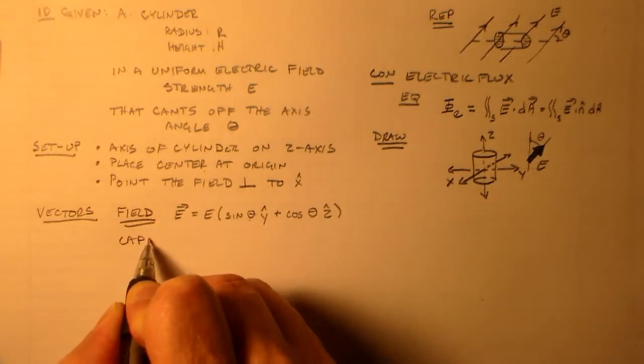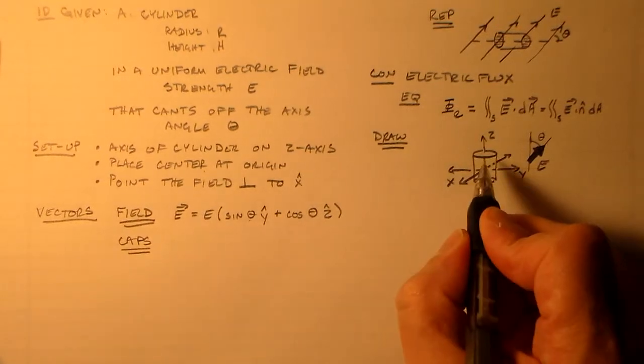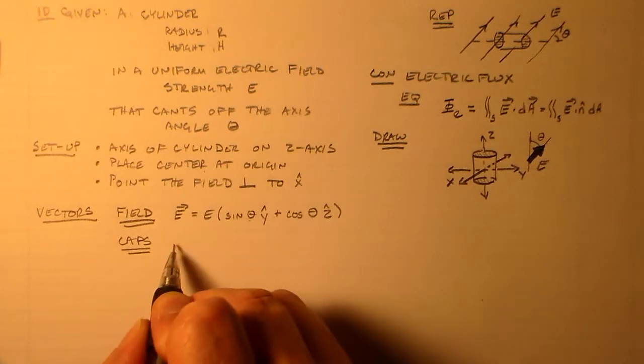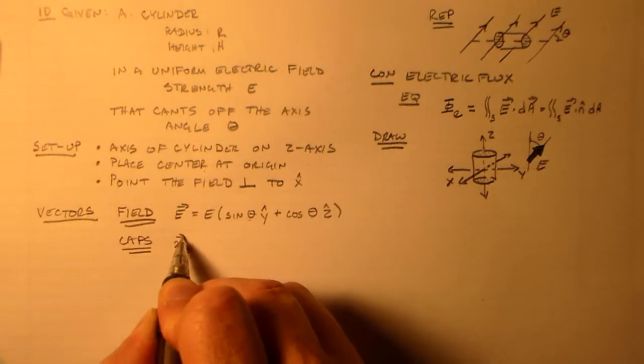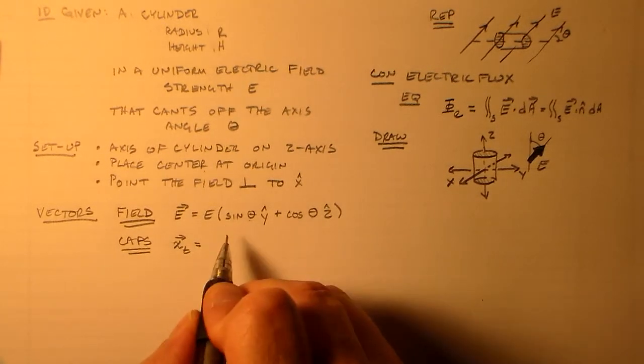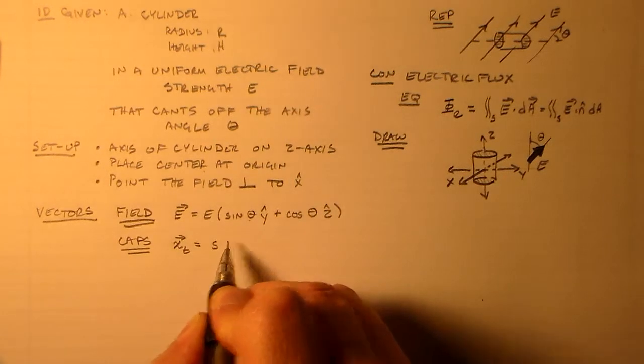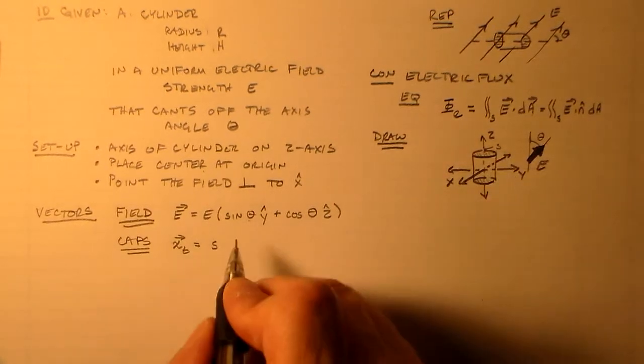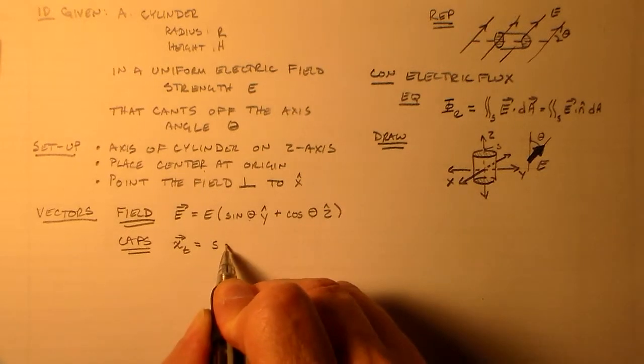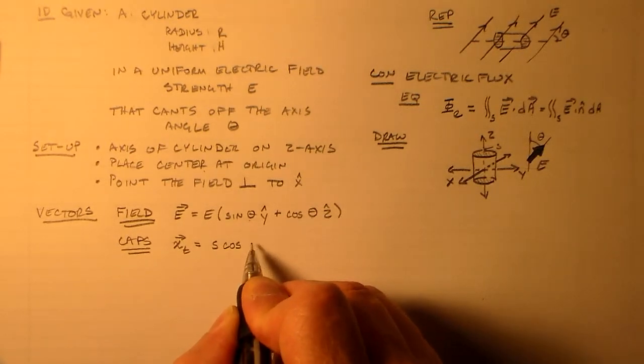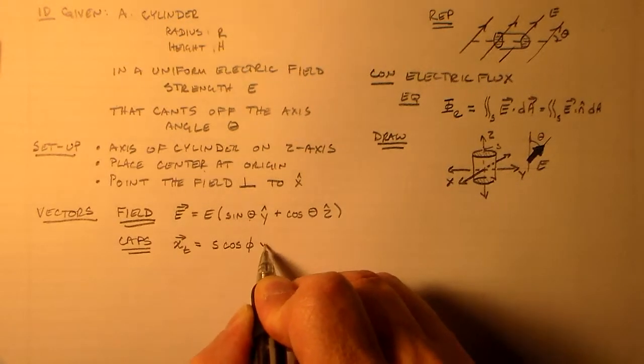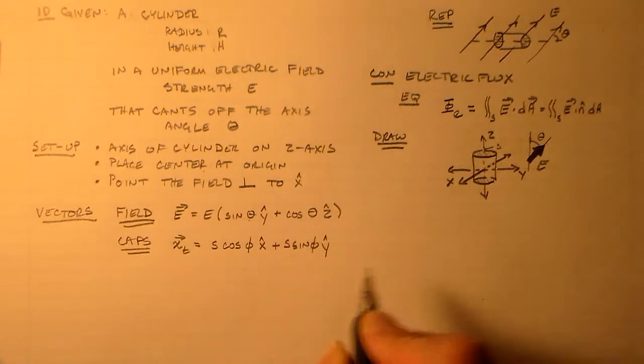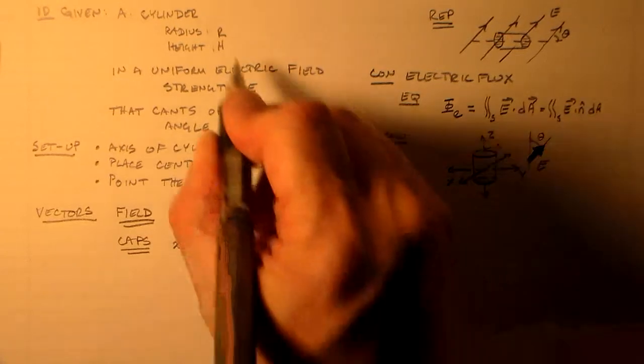We really, really care about this drawing and this setup so that we know what we're doing with our vectors. All right? And our electric field is a vector field, but obviously it's uniform, so we only have one bit to it. So that's E is equal to E sine theta in the y-hat direction. Right? So theta is coming down from the cylinder axis, which is the z-axis. So that's the polar coordinate, right? And you add in the cosine theta in the z-axis.